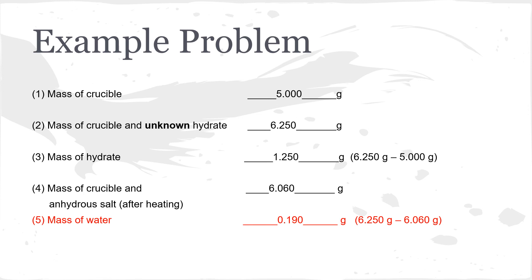You can find the mass of your water by subtracting in a couple of ways. One way is to subtract the mass of the crucible with the anhydrous salt from the mass of the crucible with the hydrate. Or you can find the mass of your anhydrous salt by taking away the mass of the crucible from the crucible-and-anhydrous-salt measurement, and then subtract that from the mass of the hydrate to get the mass of water. There are a couple of ways — whichever you find the easiest.